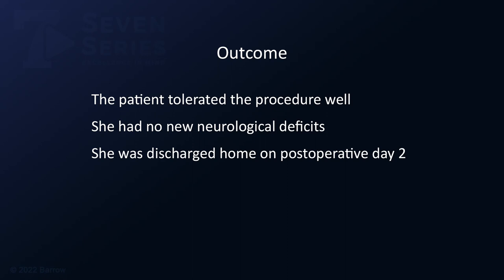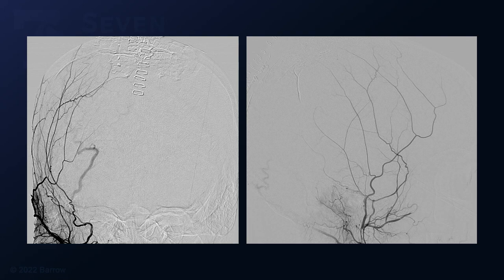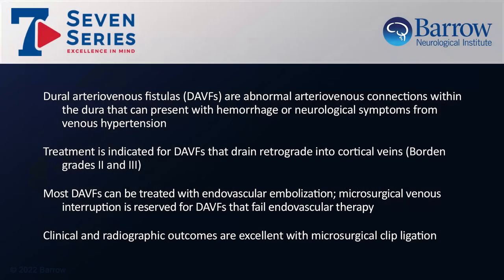The patient tolerated the procedure well. She had no new postoperative deficits and was discharged home on postoperative day 2. Her postoperative angiogram confirms the absence of dural arteriovenous shunting. In conclusion, dural arteriovenous fistulas are abnormal arteriovenous connections within the dura that can present with hemorrhage or neurologic symptoms from venous hypertension. Treatment is indicated for dAVFs that drain retrograde into cortical veins, Borden grades 2 and 3. Most dural AVFs can be cured with endovascular embolization, and microsurgical venous interruption is reserved for those that fail endovascular therapy. Clinical and radiographic outcomes are excellent with microsurgical clip ligation.